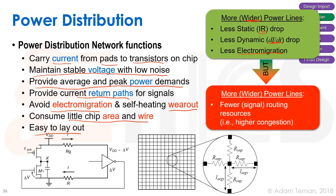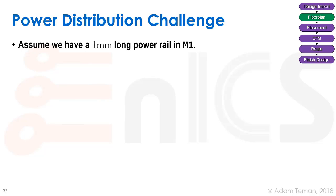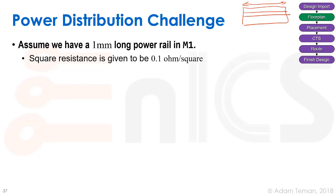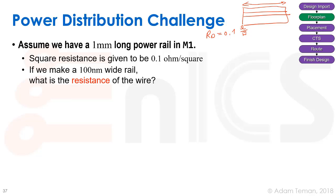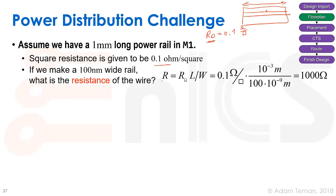Let's look at the challenge of power distribution. Assume a 1mm-long power rail in Metal 1, given a sheet resistance R_sq = 0.1 Ω/square. If we make a 100nm-wide rail — fairly wide even in a 28 or 40nm process — the resistance is R = R_sq × (length/width) = 0.1 × (1,000,000nm / 100nm) = 0.1 × 10,000 = 1,000 Ω, or 1 kΩ from side to side.